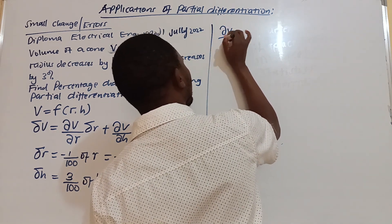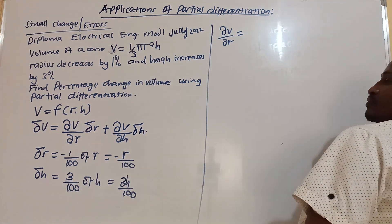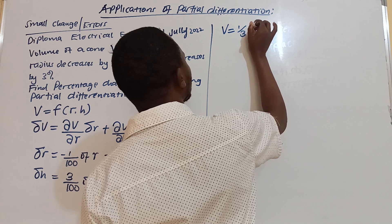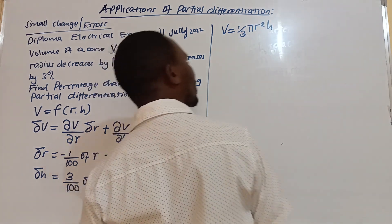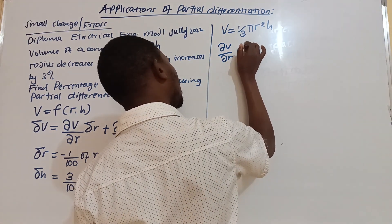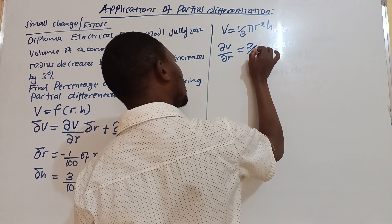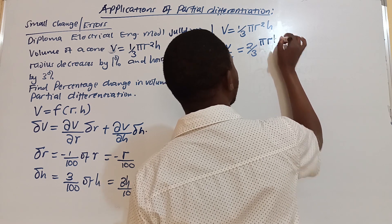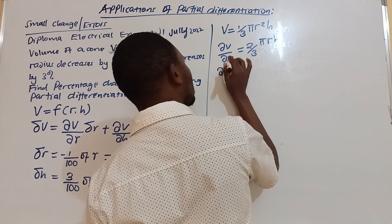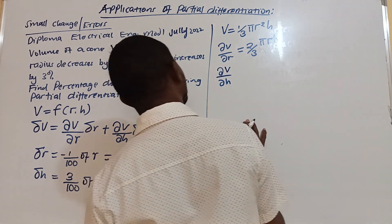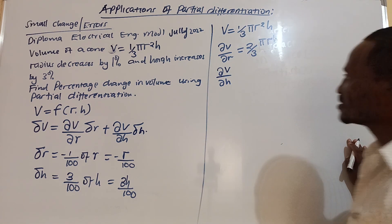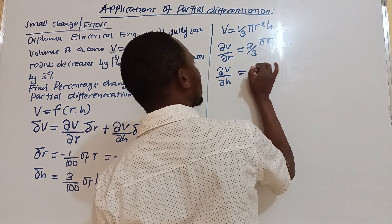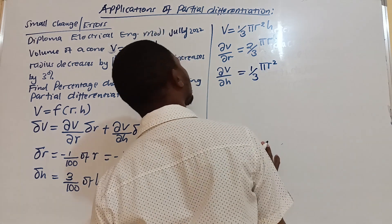The partial derivative of volume with respect to r: differentiating V = (1/3)π r² h with respect to r gives (2/3)π r h. The partial derivative of volume with respect to h: differentiating with respect to h, h disappears and we get (1/3)π r².